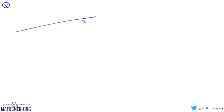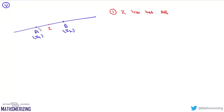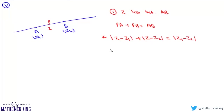The fifth locus involves a straight line passing through two points A = z₁ and B = z₂. When z lies between A and B, we have PA + PB = AB. So if |z - z₁| + |z - z₂| = |z₁ - z₂|, then z lies on line segment AB — it won't represent the complete line, only the segment between A and B.